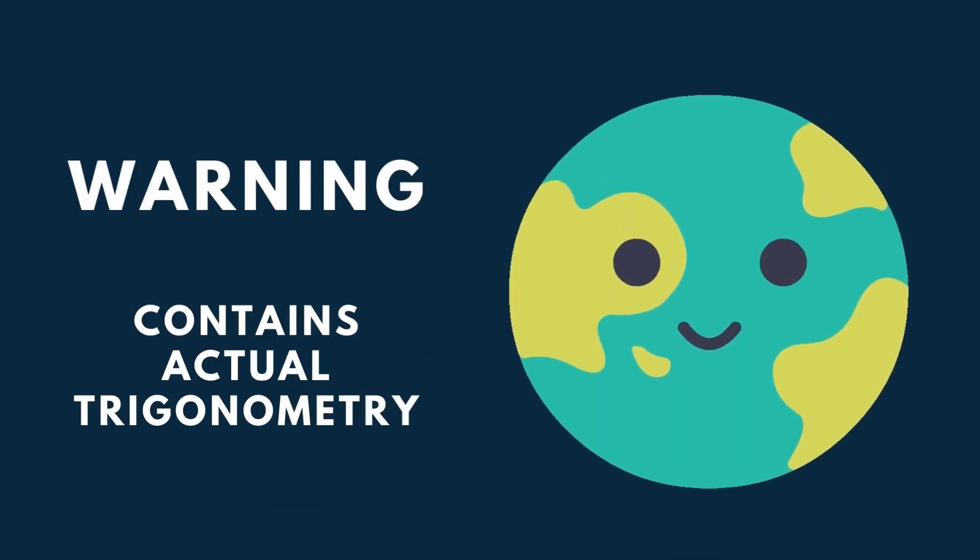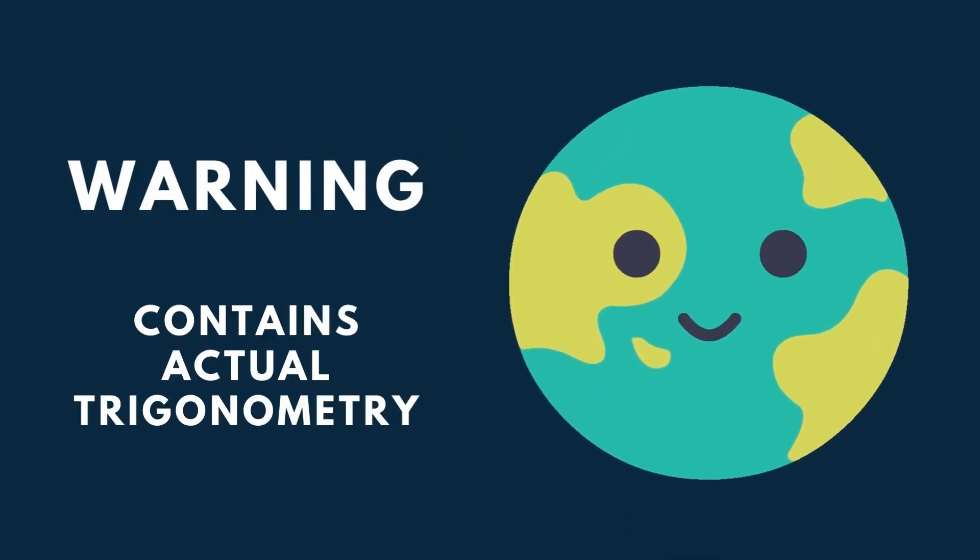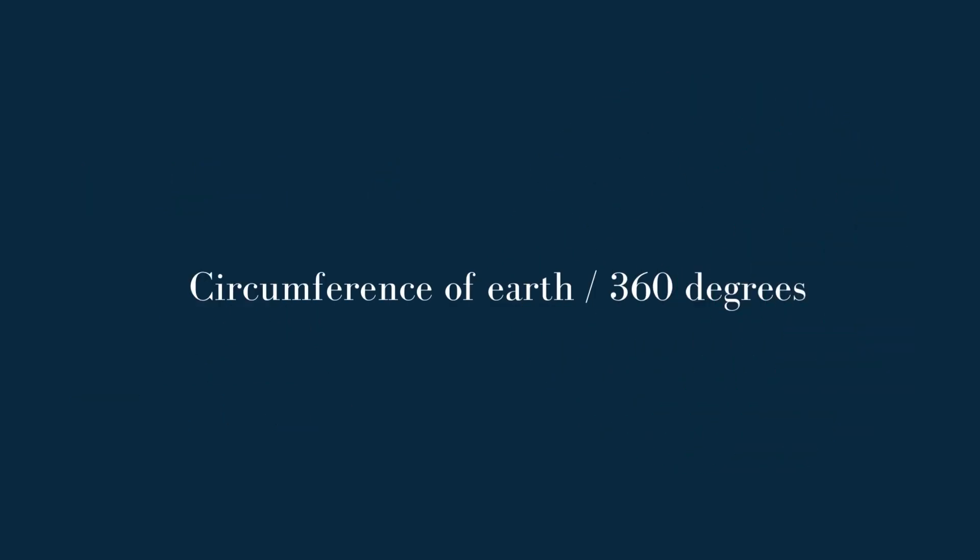So now, I will tell you how celestial navigation works on a globe. First, we need to calculate 69 miles or 111 kilometers per degree.